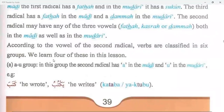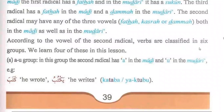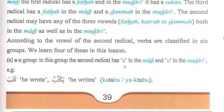According to the vowel of the second radical, verbs are classified in six groups. We will learn four of these in this lesson. The first one is the fatah-dhamma group. In this group, the second radical has fatah in the madi and dhamma in the mudari.